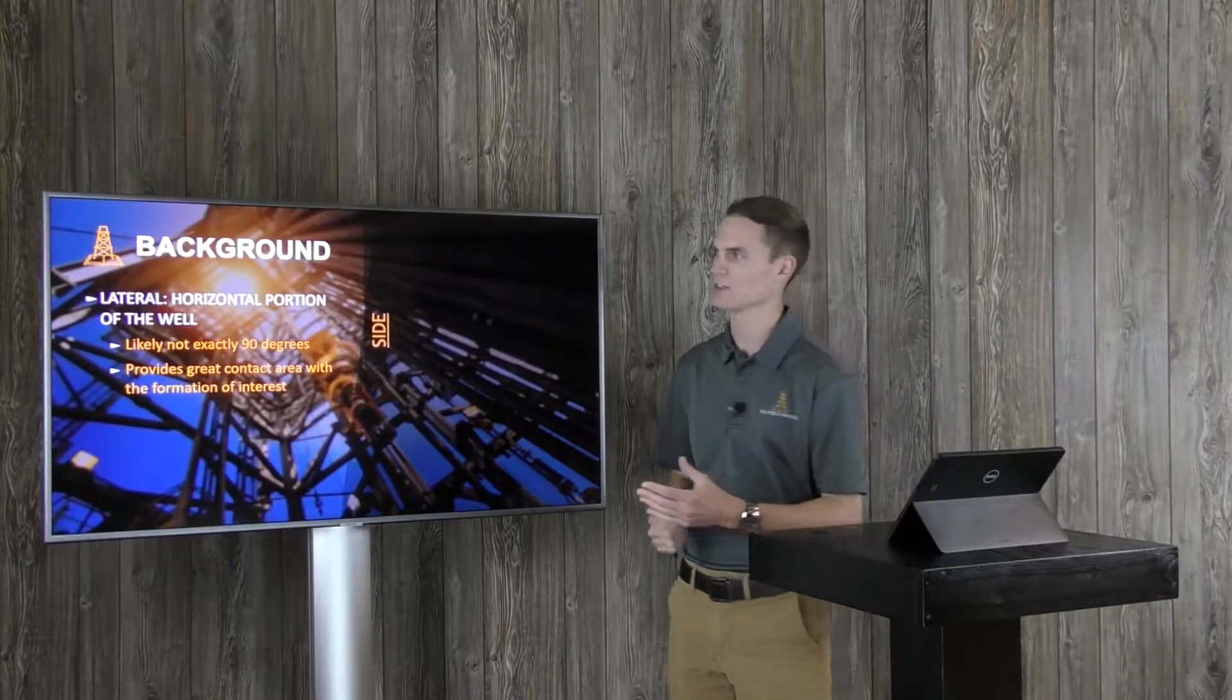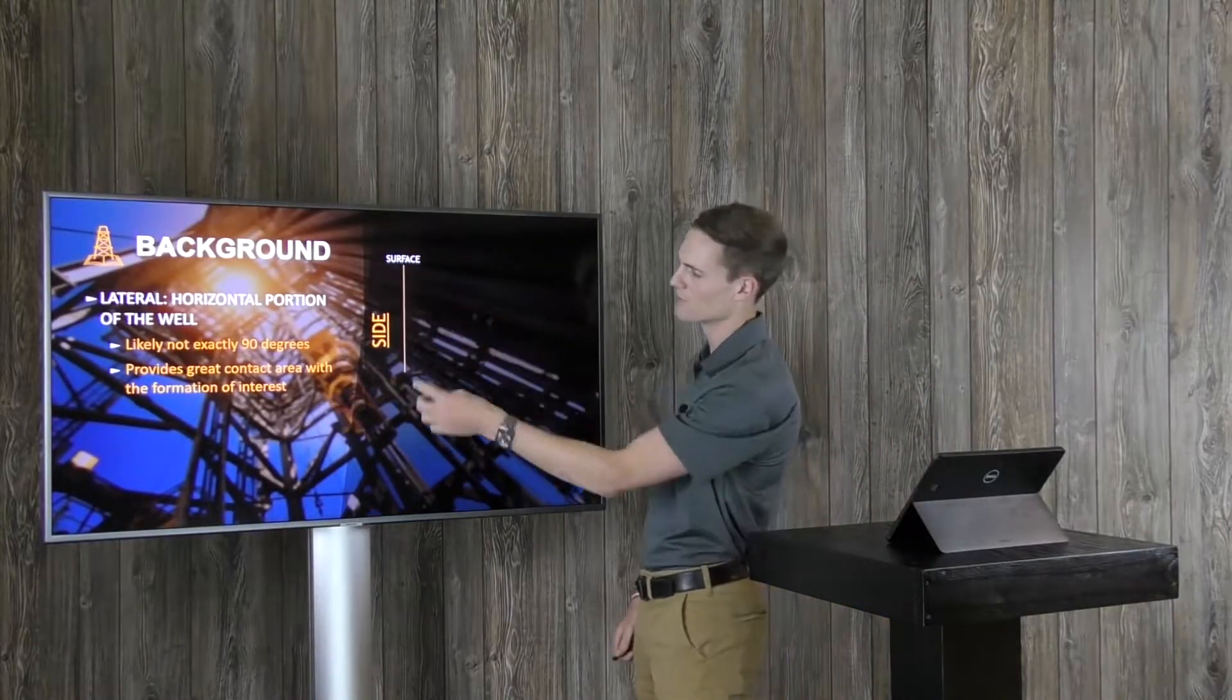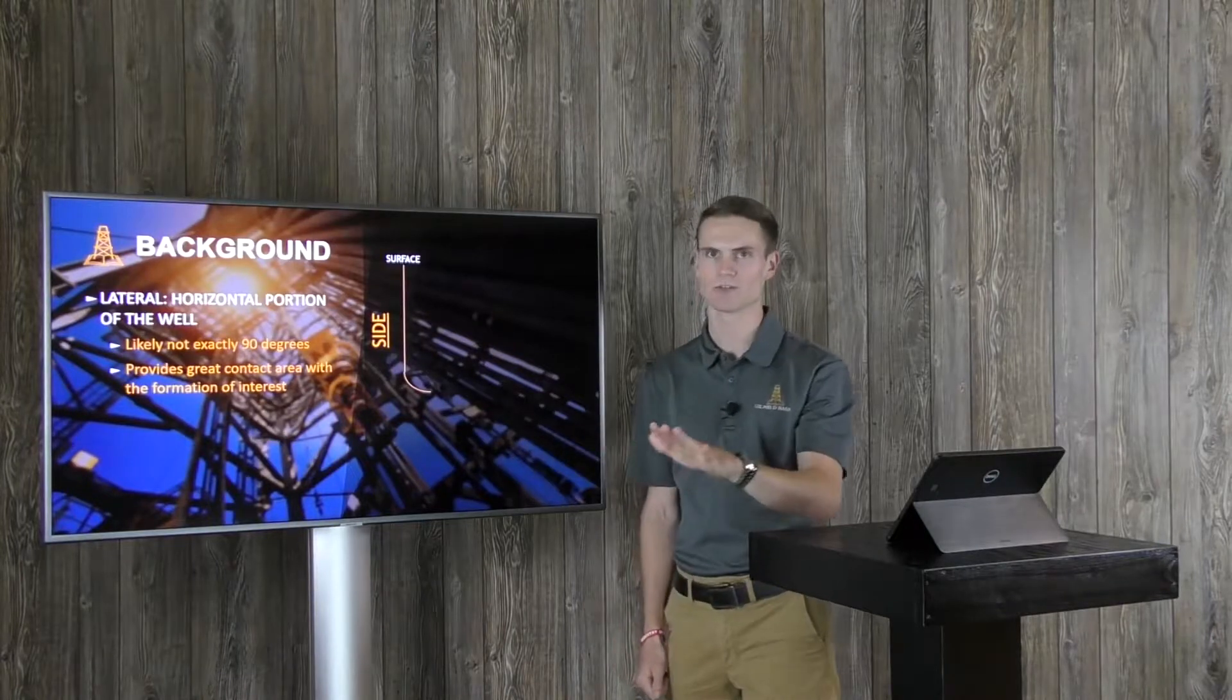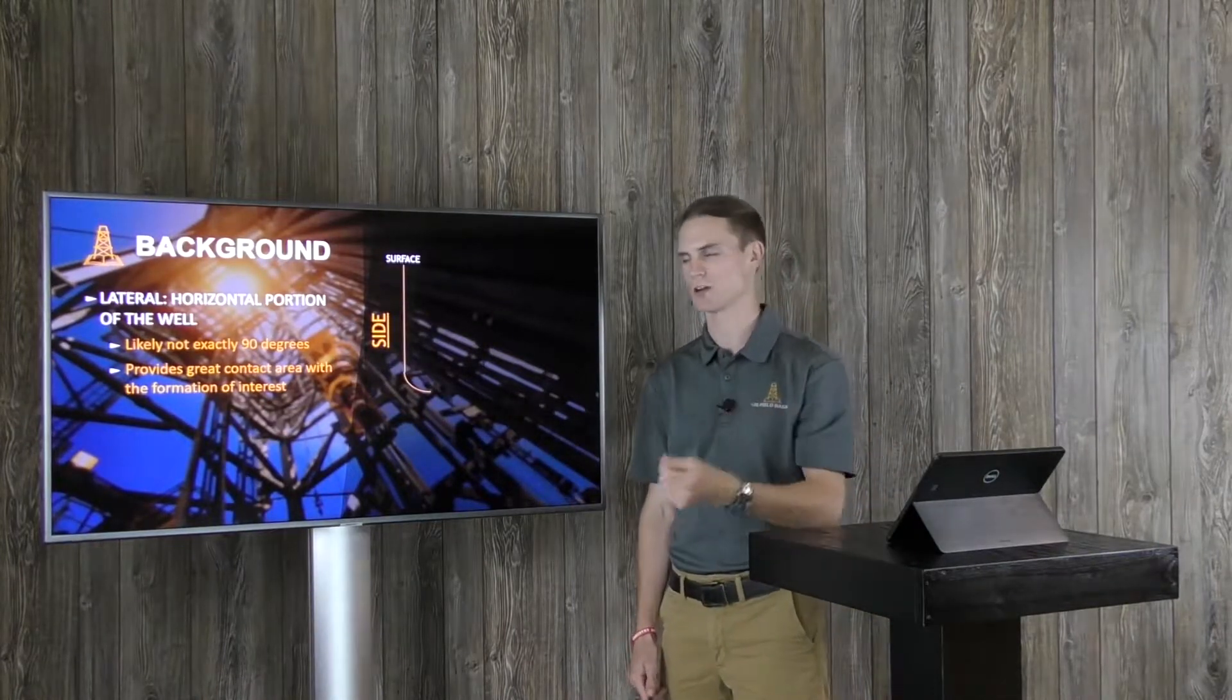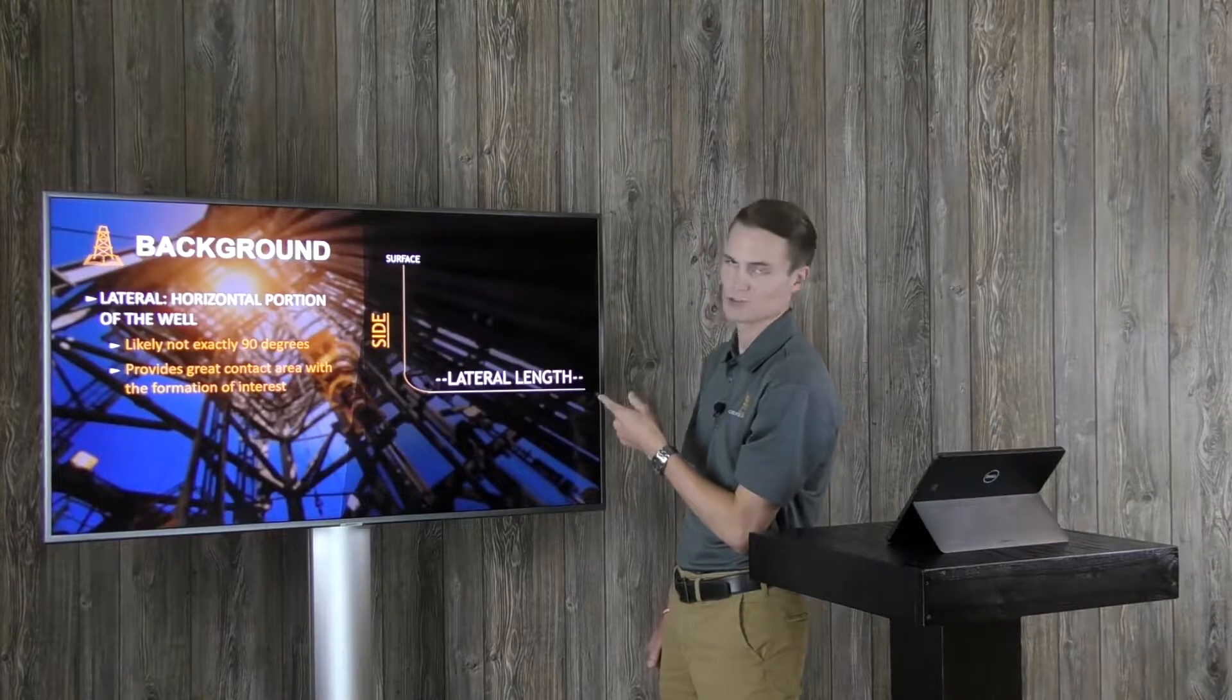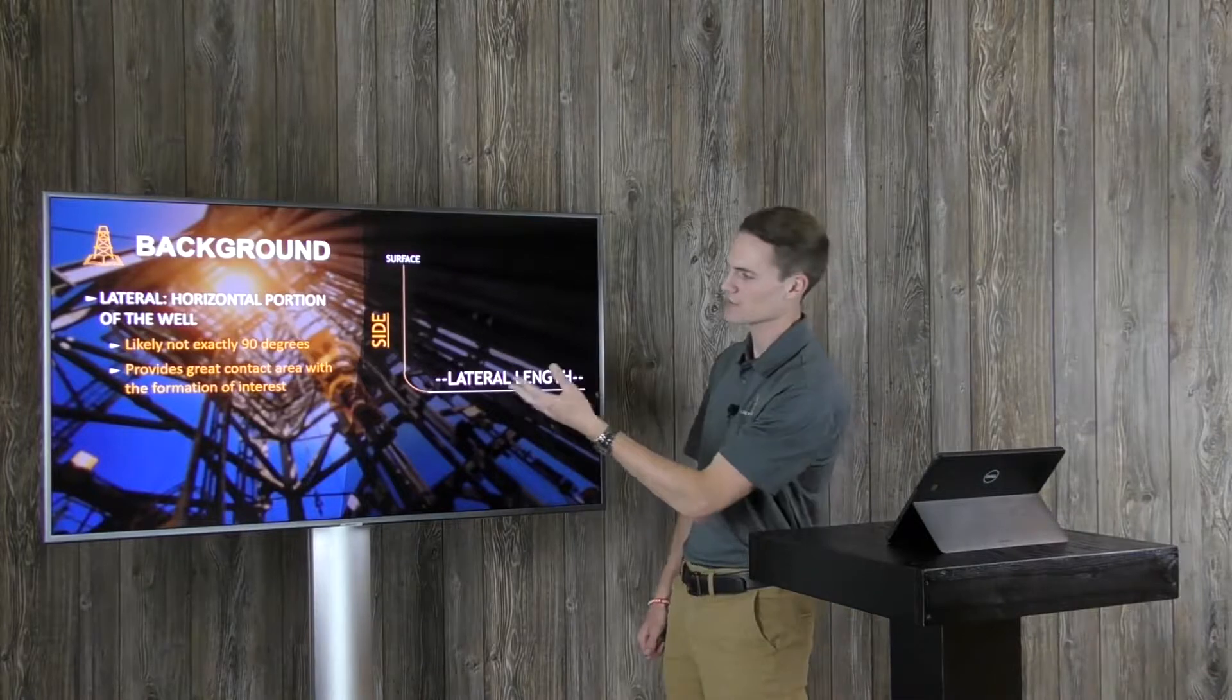Here's an aerial view to give you perspective. You've got your surface location, the vertical section of the well trying to get down to the formation that you want. Then you're going to kick off with directional tools, build the curve, land, and go build your lateral. There's your horizontal section of your well—that's what we call a lateral.